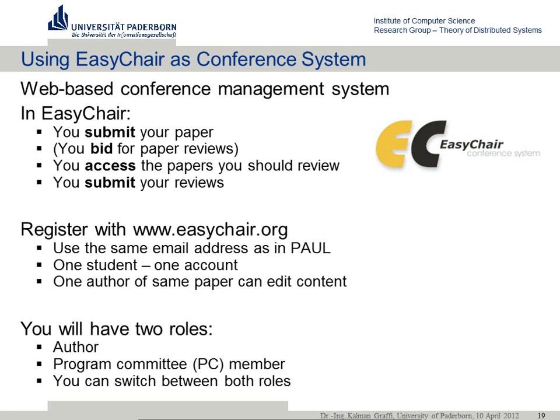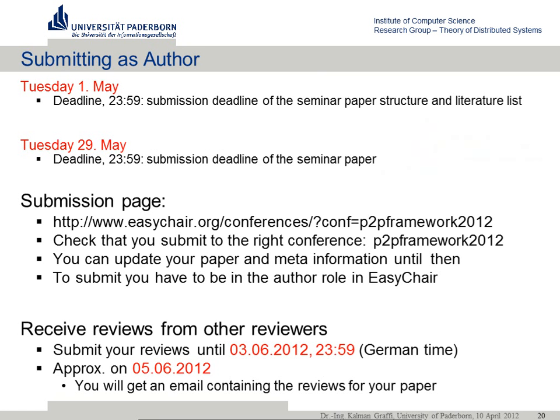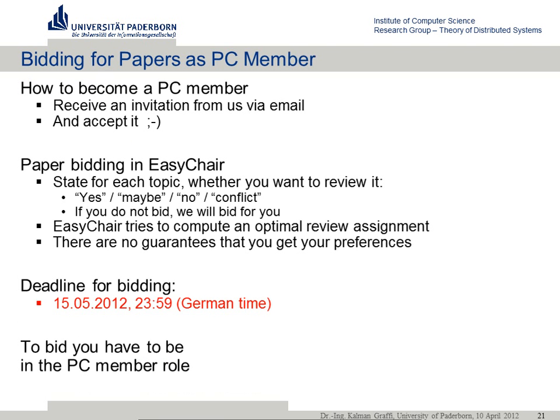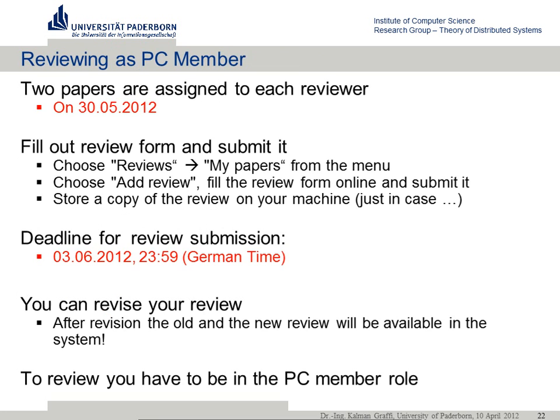Your roles are author and program committee member — that means reviewer — and you can switch between both if you use the same email address. Again the deadlines: 1st of May for the paper structure, 29th of May for the paper submission. The deadline for bidding — saying what you'd like to review — is in the middle, two weeks after the structure has been submitted.